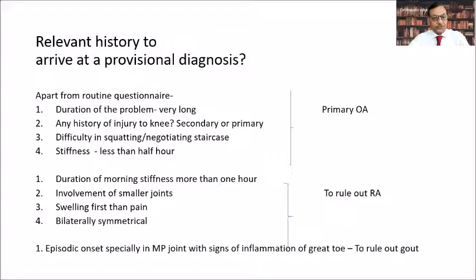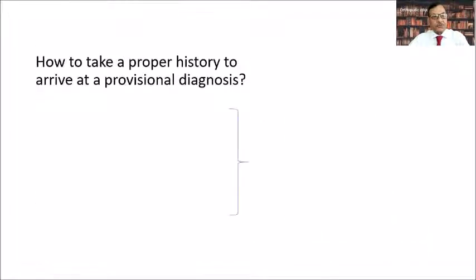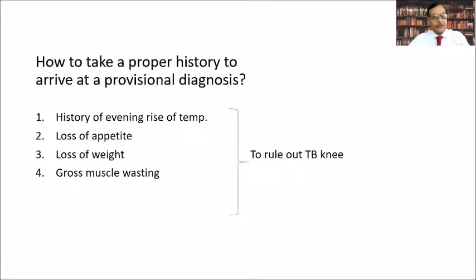Episodic onset, especially in the MTP joint with signs of inflammation of the great toe, is used to rule out gouty arthritis. To rule out tuberculosis, you must take a history of evening rise of temperature, loss of appetite, loss of weight, and locally there will be muscle wasting that the patient can describe to the doctor.